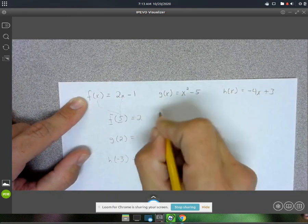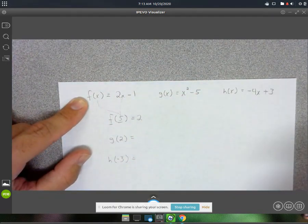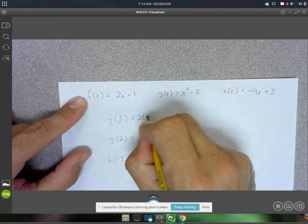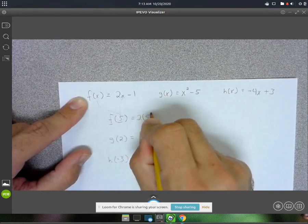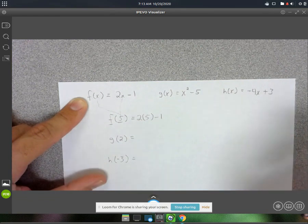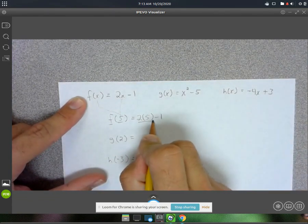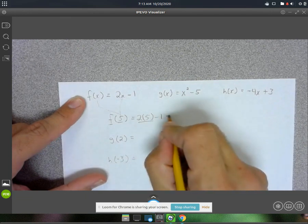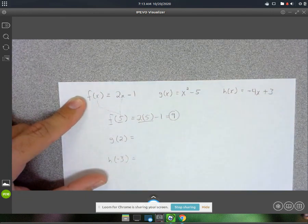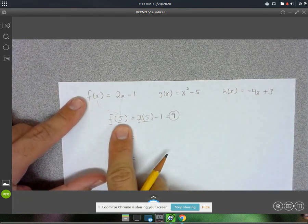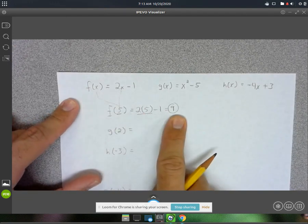So, it's just evaluating the functions, what this is called. So it's 2, and then instead of an x, we're putting a 5 minus 1. Okay, and then you just evaluate it. 2 times 5 is 10, 10 minus 1 is 9. Okay, so that is f of 5. So when you input 5, you get 9 back.